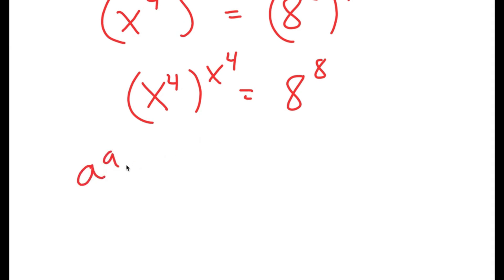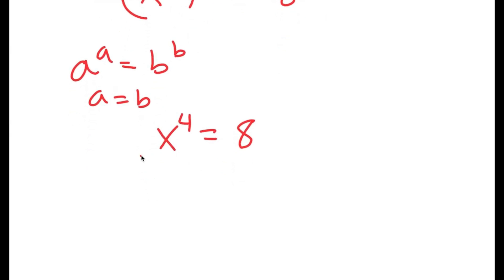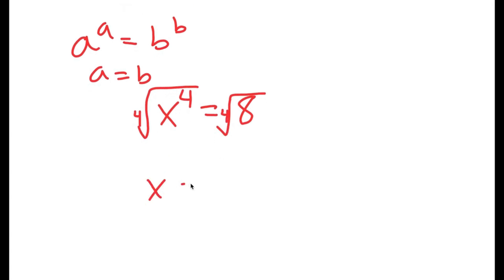If I have something in the form a to the power of a is equal to b to the power of b, this means that a equals b. So in this case, x to the power of 4 is equal to 8. And to solve for x, I'm going to take the 4th root on both sides. So I get x is equal to positive or negative 4th root of 8.